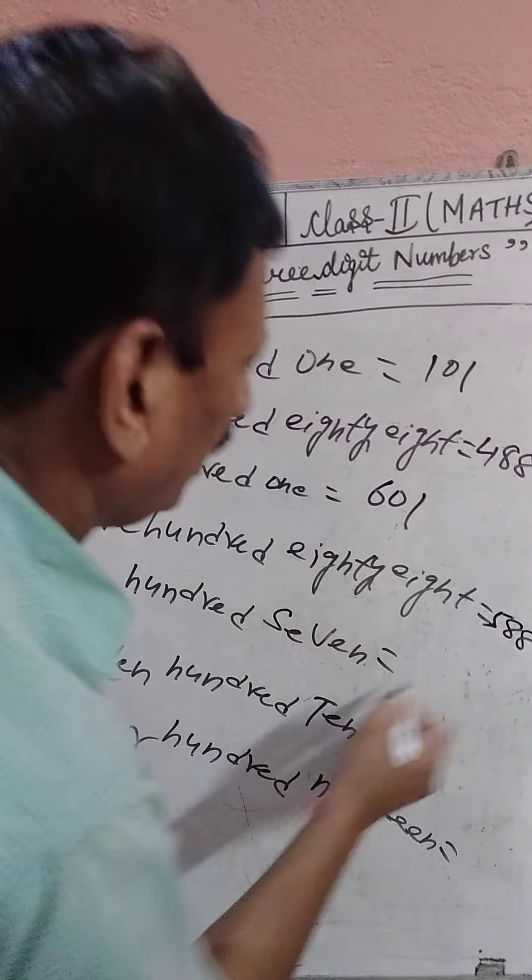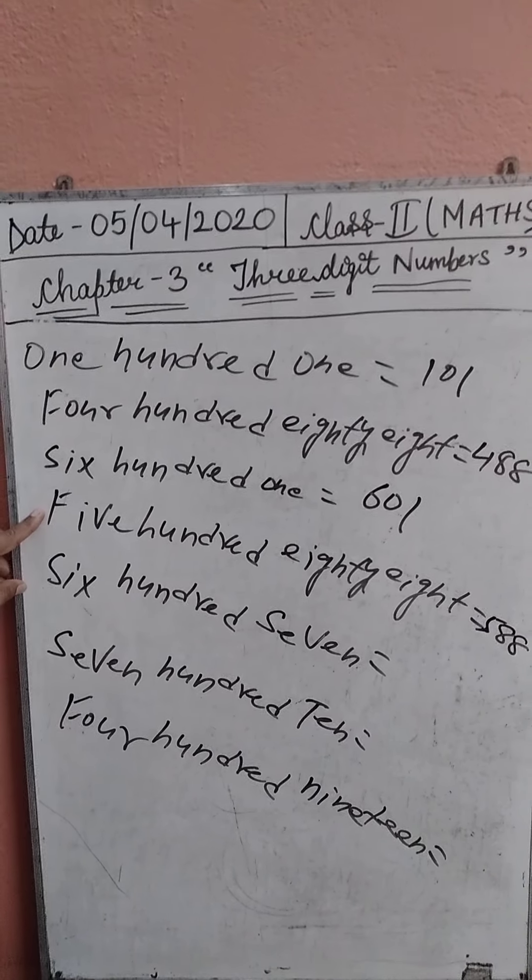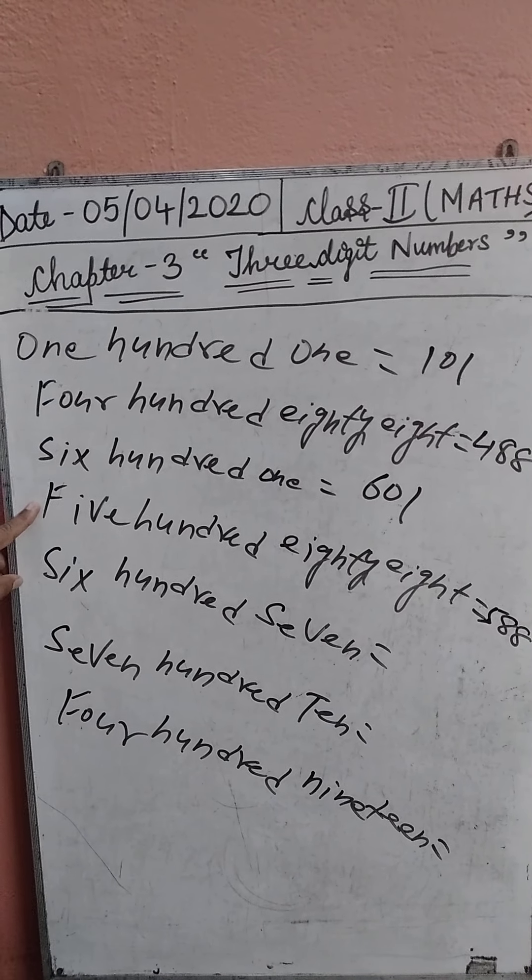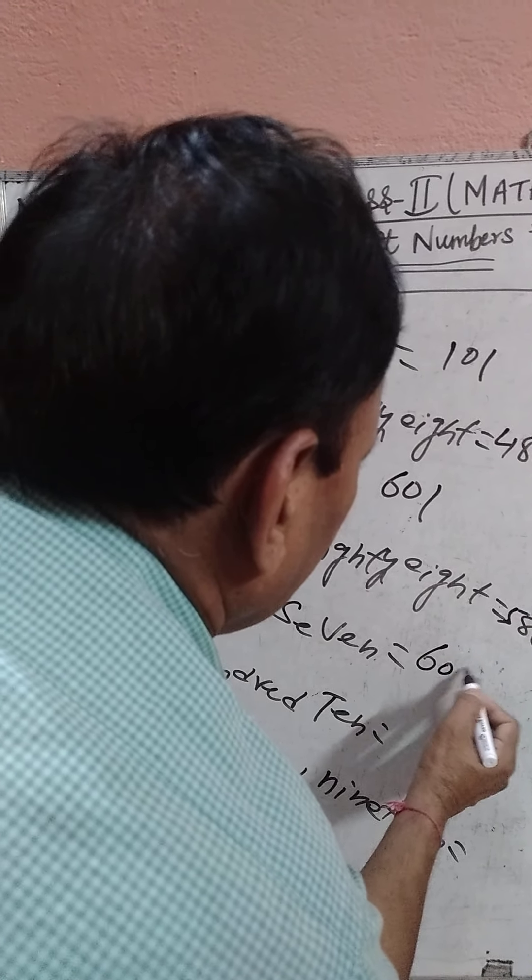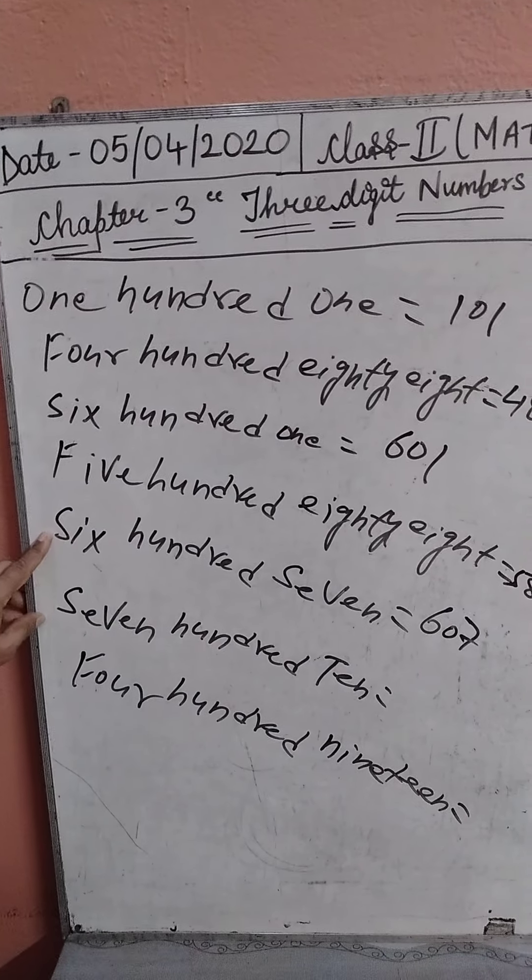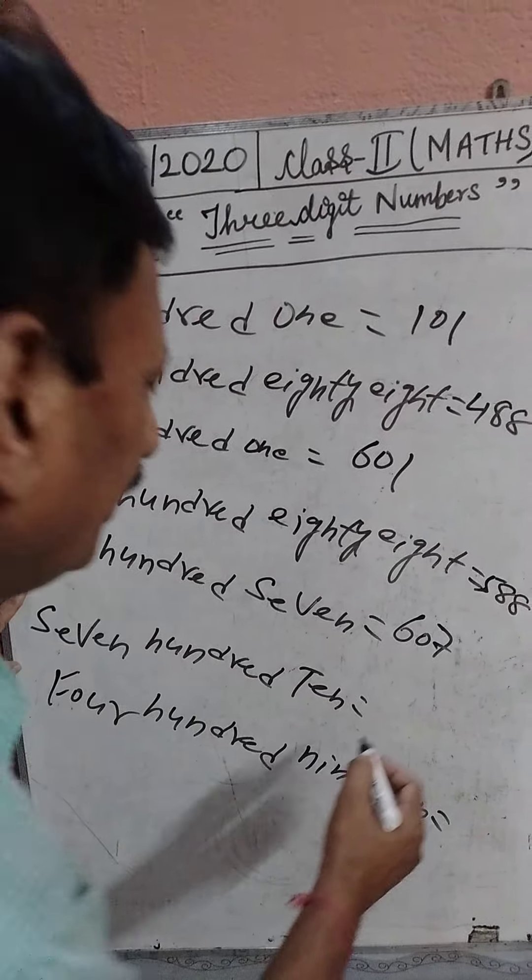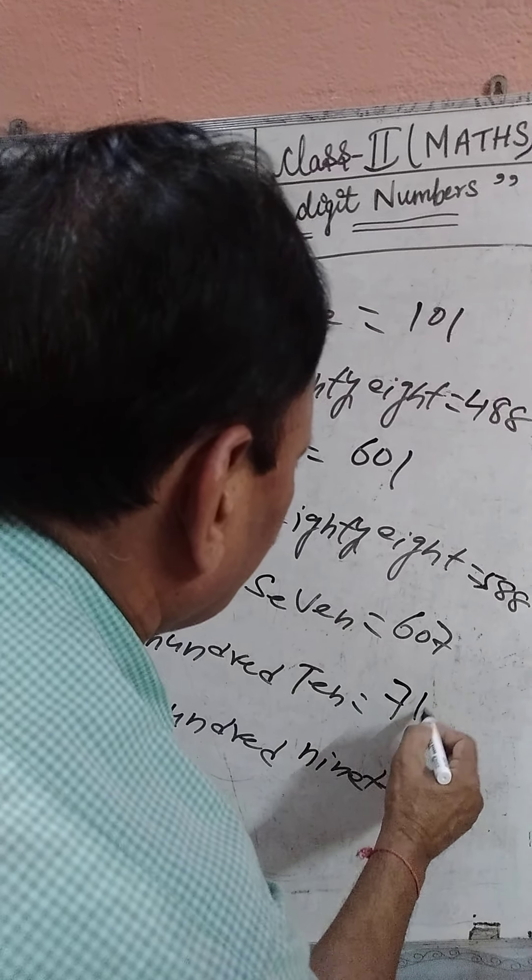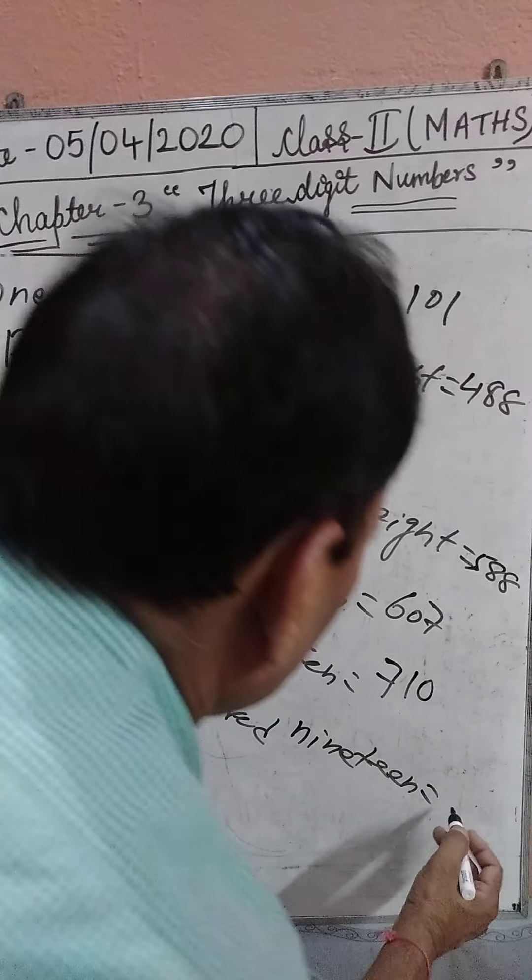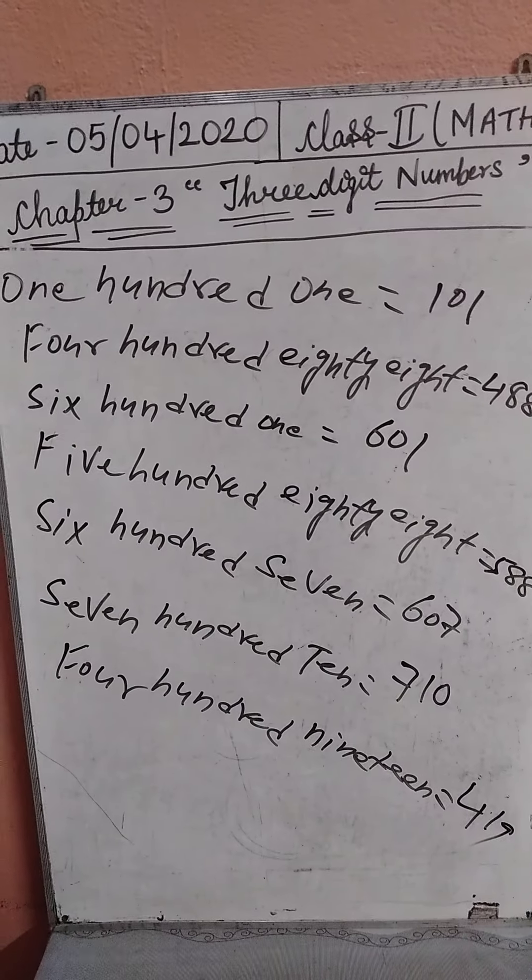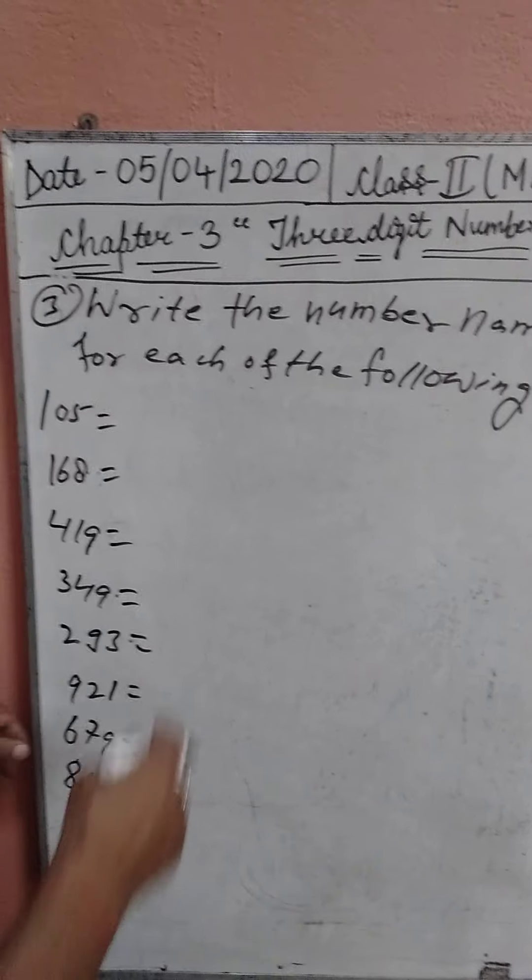588. Next, 607. Next, 710. Next, 419. Children, portion number 3: write the number name for each of the following number names.